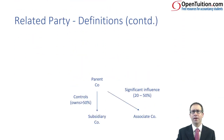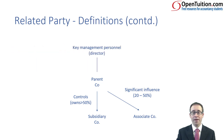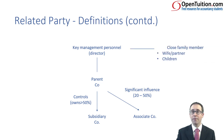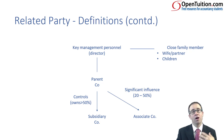Moving on a little, in the example with parent, sub and associate they are all related parties. Further related parties to consider will be key management personnel. A director, for example, is directly involved with the parent and has an element of control, so they are by definition a related party. Also, close family members of the director — the director's wife, partner, or any children — are all related parties of the parent company and therefore of the group.